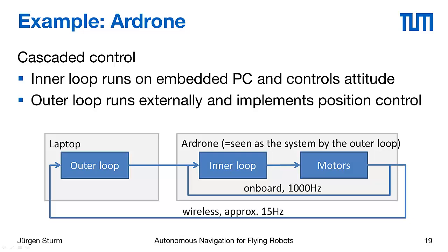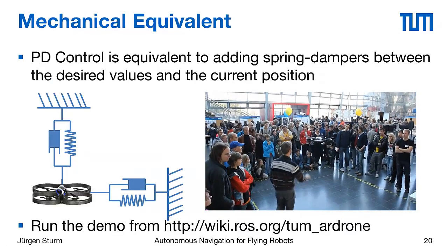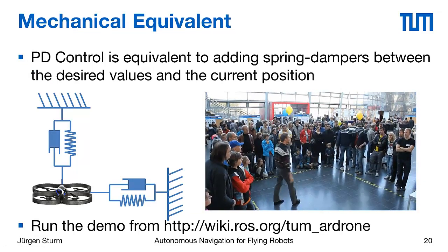These two control loops run at different speeds. The internal loop runs, we don't really know, but it probably runs at around 1 kHz. While the outer loop runs, depending on your wireless connection, at approximately 15 to 20 Hz.